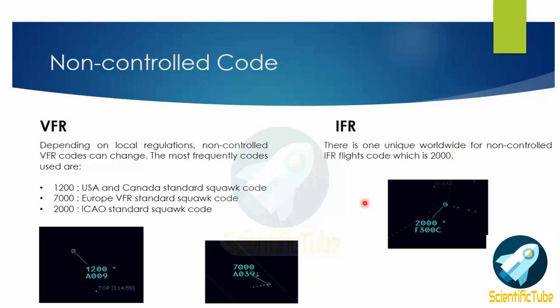Let's discuss two VFR scenarios. Suppose I am Victor Tango Golf Echo Charlie, calling Chennai Delivery for a local VFR circuit: 'Chennai Delivery, Victor Tango Golf Charlie, with information Delta, on board at the general aviation stand, request VFR clearance for local circuit.' The controller responds: 'Victor Tango Golf Echo Charlie, Chennai Delivery, good evening. Cleared for left-hand circuit pattern runway 07, climb and maintain 1,100 feet, squawk VFR.' When the controller says squawk VFR, the pilot is to squawk 1200 or 7000 as per local standard.